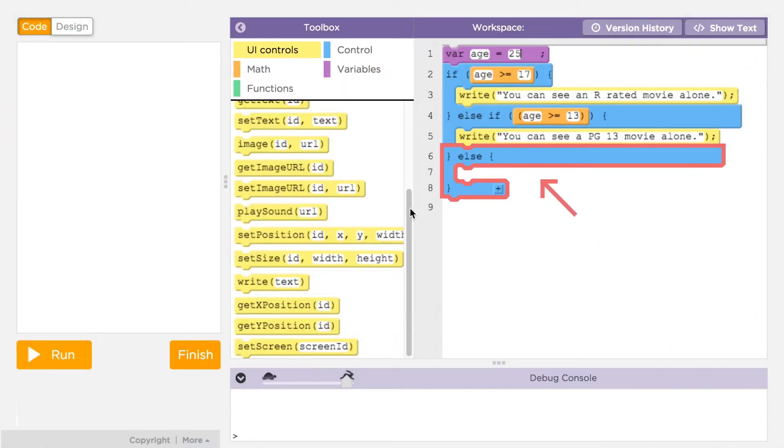An else if statement is another condition that a program checks only if the previous if statements were false.